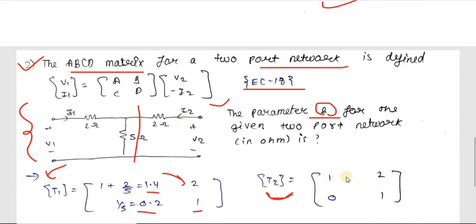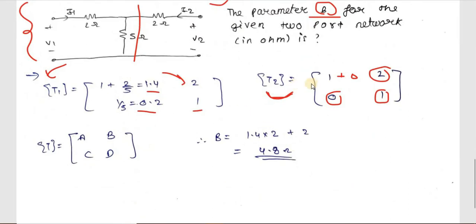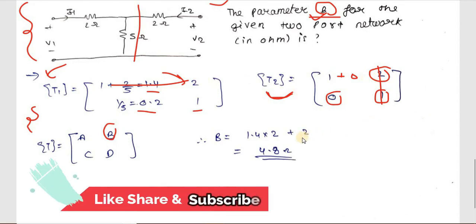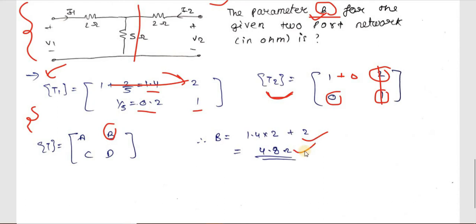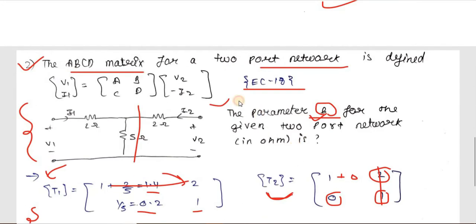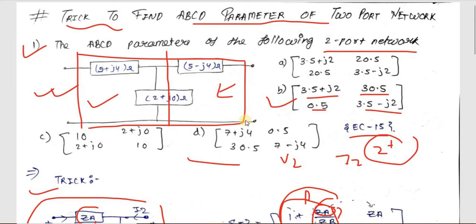For network two: ZA = 2 Ω and ZB = ∞, so A = 1, B = ZA = 2, C = 0, D = 1. Since we only need parameter B from the final matrix, we only multiply the first row of T1 with the second column of T2: B = 1.4×2 + 2×1 = 4.8 Ω. The answer is 4.8 Ω, saving significant time versus the traditional method.